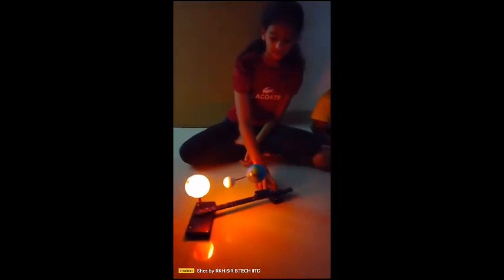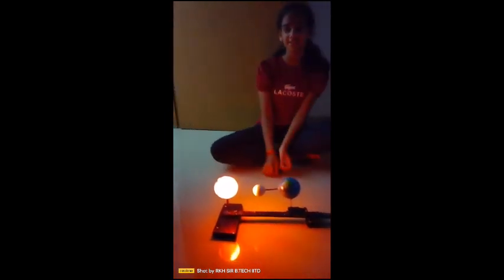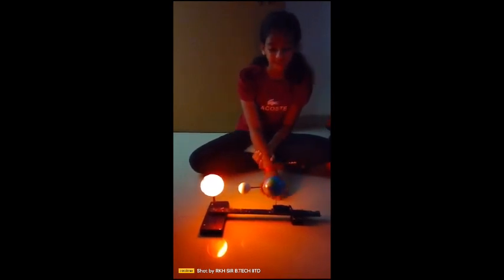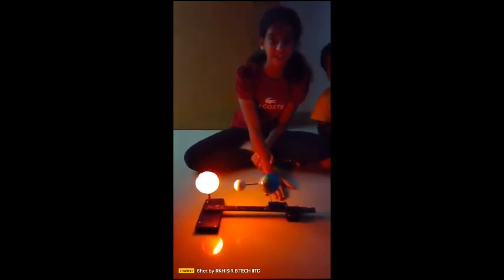My first point is revolution. The Earth revolves around the Sun like this. It takes 365 days to complete one revolution. Second point: rotation. The Earth rotates around its own axis.